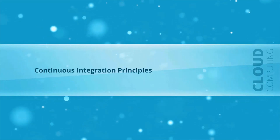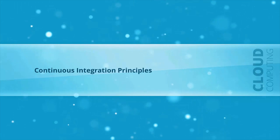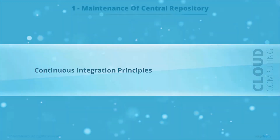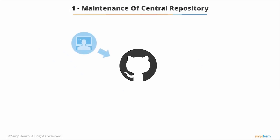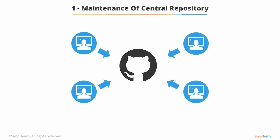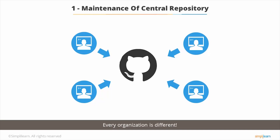How do we get started with CI? Let's analyze some of CI's core principles. Our first principle is the maintenance of a central repository. This means that every developer commits to a central repository frequently and regularly, so every team member has access to the latest version of the project at all times. Every organization will differ in terms of deadlines and rules for introducing new code, but the main takeaway is to commit frequently and regularly.